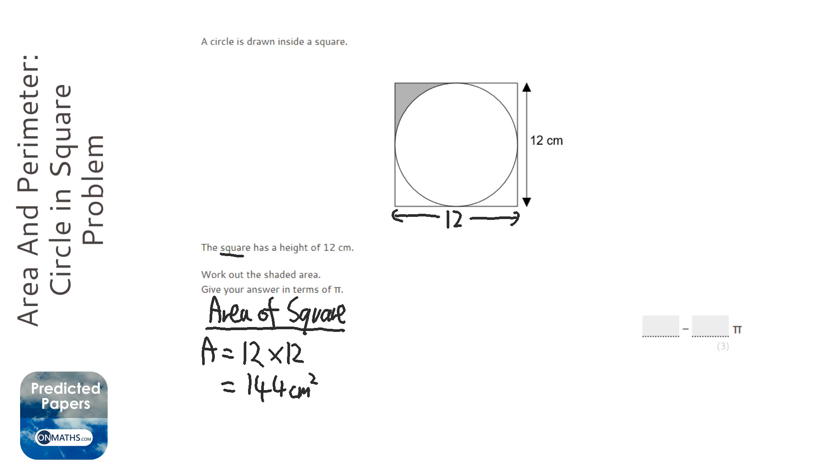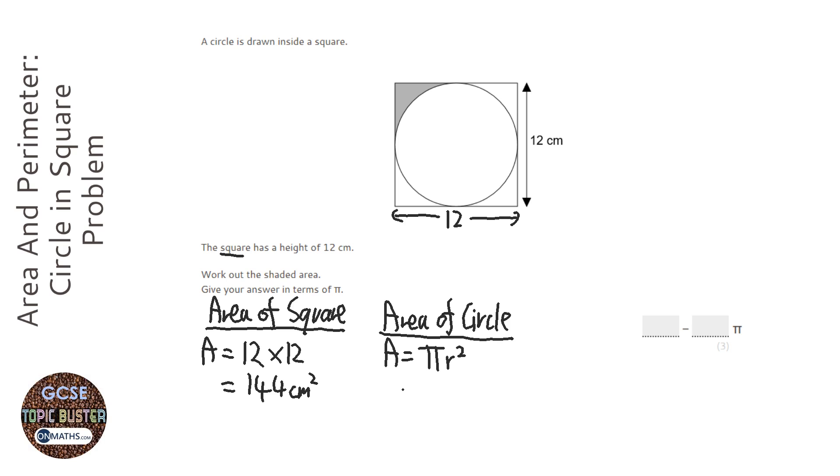Next thing to work out is the area of the circle. Now this you need to remember the formula, which is πr². And that you do need to know because you're not given that in the exam. So it's going to be π times, and now what is the radius of that circle?